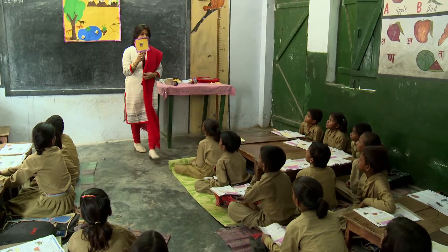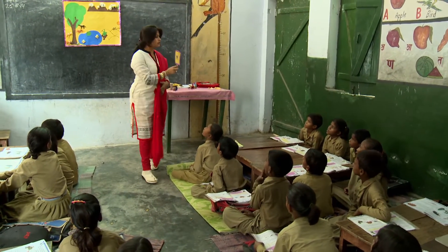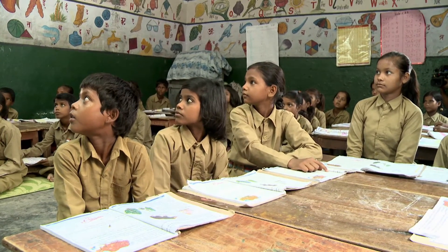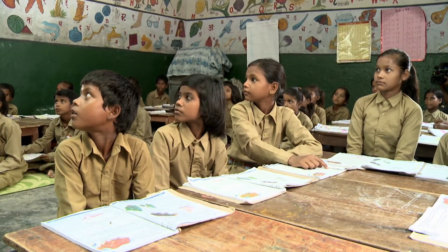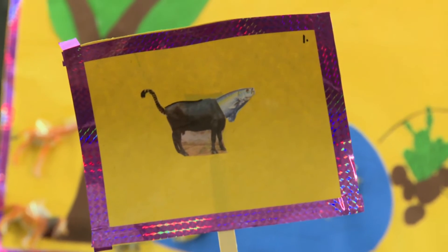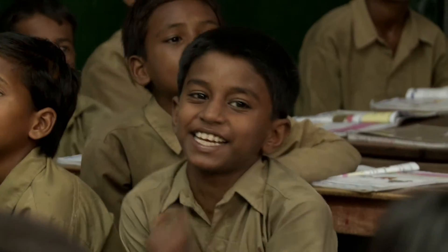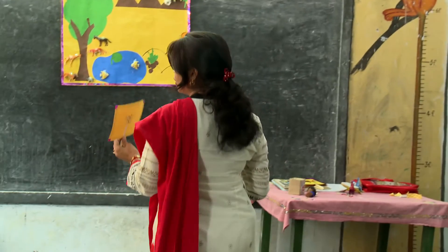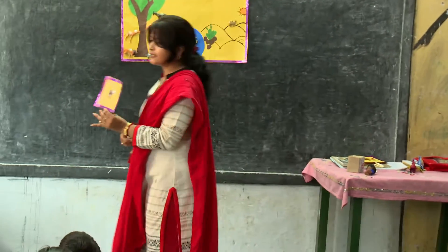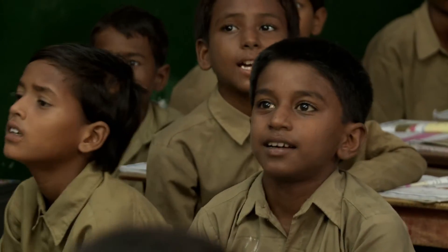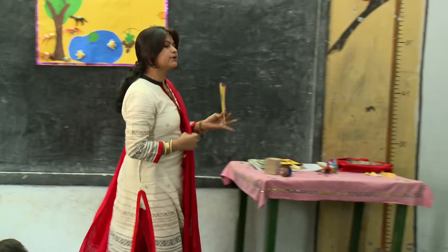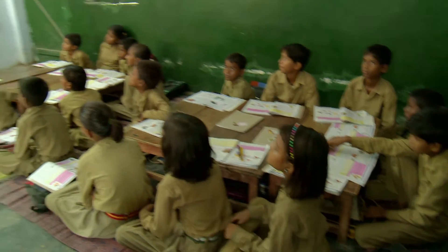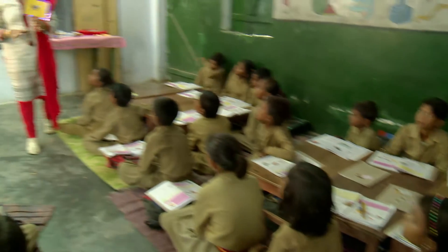The teacher reveals the animal and asks students what it is. Its mouth belonged to a bird, and its body was that of a horse — a chimeric creature combining features of different animals.